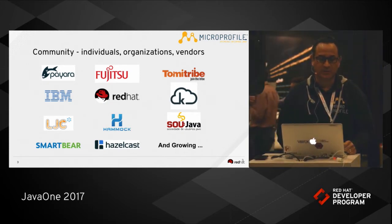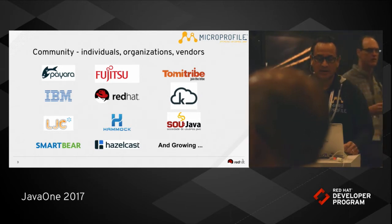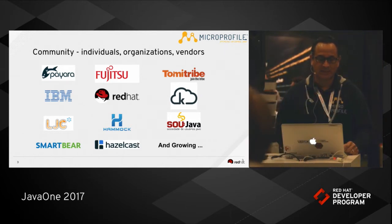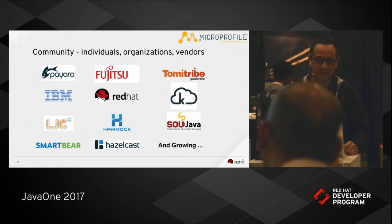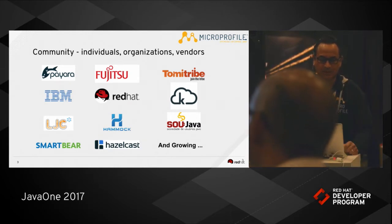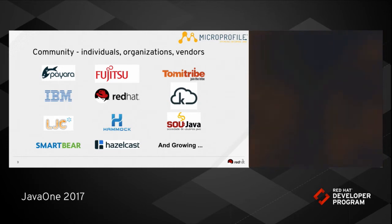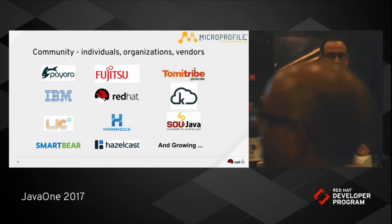Members include Payara, Fujitsu, Tomitribe, IBM, Red Hat of course, Cumulocity, LJC — the London Java Group — Hammock, SouJava which is a Java group in Brazil, SmartBear, and Hazelcast. And the community keeps growing.